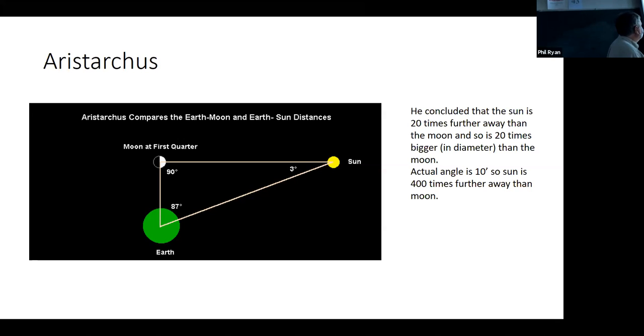We see some problems here because this is not in reality, it's not 87 degrees, it's actually 89 degrees 50 minutes. And this is actually just 10 minutes. So that means when you do that, the sun is actually 400 times further away than the moon.